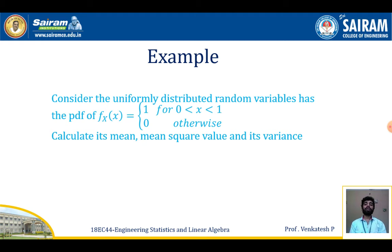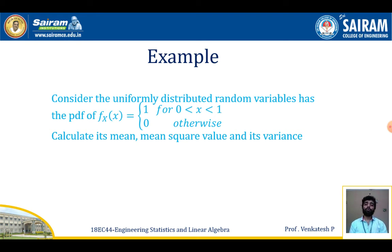Now one example on uniform distribution. Consider a uniformly distributed random variable with PDF f(x) = 1 for 0 < x < 1, and 0 otherwise. Calculate its mean, mean square value, and variance. The given function is f(x) = 1 over the interval [0, 1]. Using the formula f(x) = 1/(b - a) with b = 1 and a = 0, the condition is satisfied and we confirm this is a valid uniform distribution.